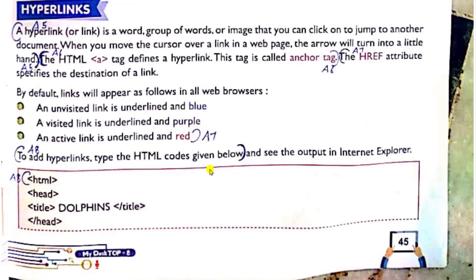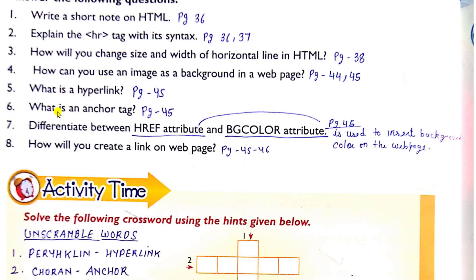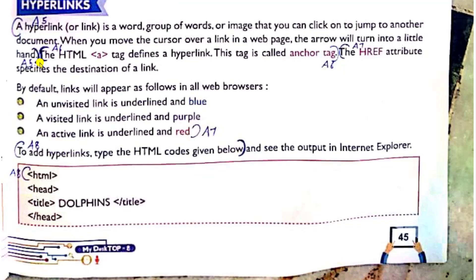Question five. What is a hyperlink? So the answer five is here. A hyperlink or link is a word, group of words, or image that you can click on to jump to another document. When you move the cursor over a link in a web page, the arrow will turn into a little hand. This is your complete answer fifth. Now, question six is what is an anchor tag? The HTML A tag defines a hyperlink. This tag is called anchor tag. This is your complete answer six only.